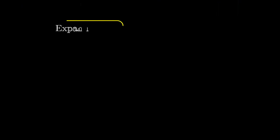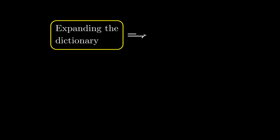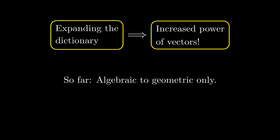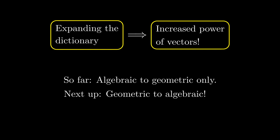In general, as we expand our dictionary with more and more concepts, vectors get increasingly powerful as a mathematical tool. So far, we have only filled in the dictionary by first defining a concept in the algebraic setting and then translating it to the geometric setting. But the fact is that we can go in the other direction as well — defining a concept in the geometric setting and then translating it to the algebraic setting. In this video, we'll have time to go over one such concept, which at the surface level seems purely geometric without any clear connection to algebra. And that concept is rotations.